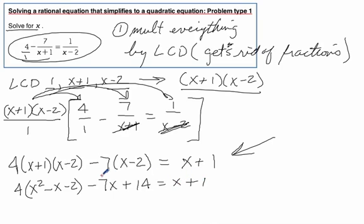So what we've got to do now is distribute this. 4x squared minus 4x minus 8. Then we have a minus 7x plus 14 equals x plus 1.